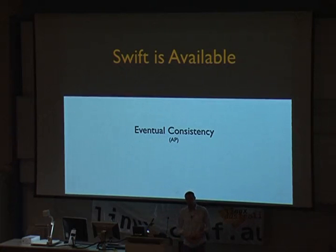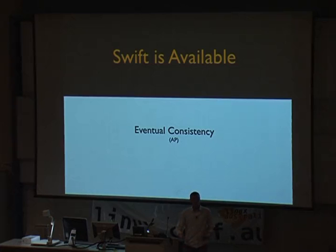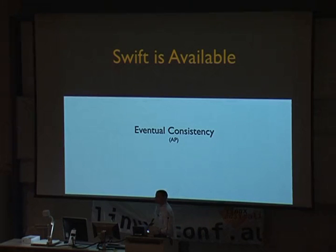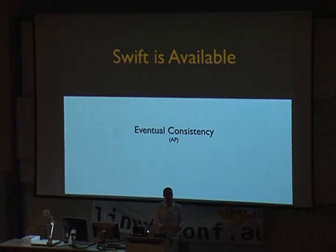Swift is available, and if you know the CAP theorem, we sacrifice consistency for availability. It's an eventually consistent system. So normally if there are no errors, Swift will give you 100% consistency. But in the face of errors — say a hard drive has failed, a server is down, or even a rack of servers is down — in that case you may fall into an eventual consistency window and not be able to see all of your objects in an object listing immediately.